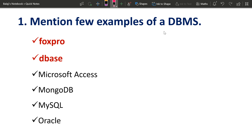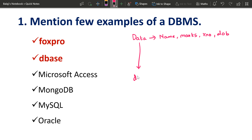The first question is: mention a few examples of DBMS. We are going to talk about the terminology. What is data? Data refers to all the details we store — Name, Marks, Roll number, public exam, Date of Birth — all such data. We are going to store this data in a database. A database is where we store data so we can use it, access it, and retrieve it.